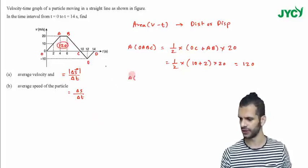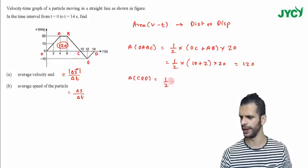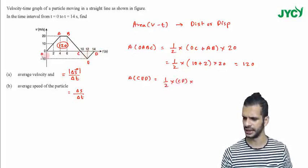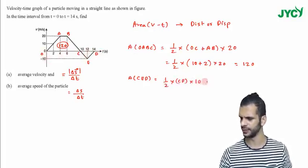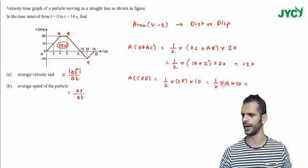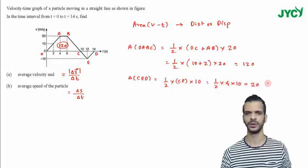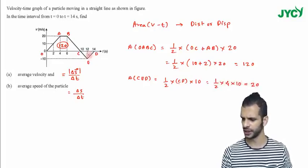And area of this particular triangle, the small triangle, it is CED which is half into base. Now the base here which is CD and the height here is again 10. So half into base which is 4 into 10, I got 20.